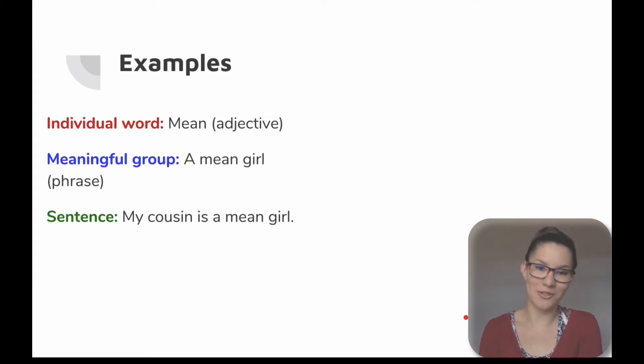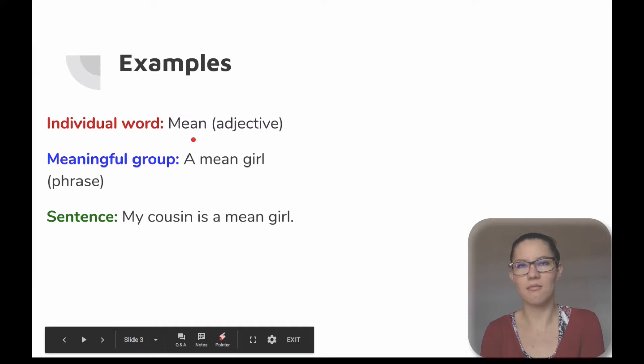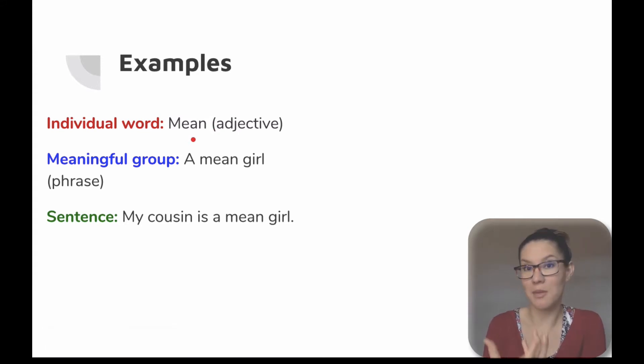Well, let me show you a couple of examples of what I mean. Many times we learn the word mean as a verb first, like what do you mean? But if you see it here, it is working as an adjective. If you just see the word in isolation, you might not know this, but when you see it as part of a meaningful group, a mean girl, now you can say, okay, this word is not working as a verb because it goes before a noun and that means it is an adjective. And then you can make sense out of it when you see it in a complete sentence like, my cousin is a mean girl.